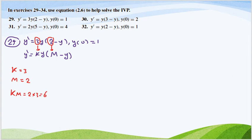We know that the general solution for this equation is Y equals M times A times E to the power MK times T over 1 plus A times E to the power MK times T.